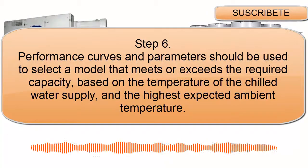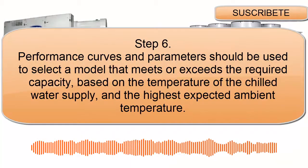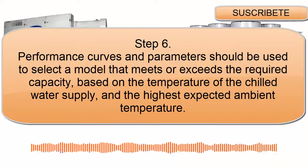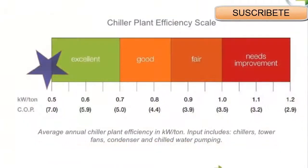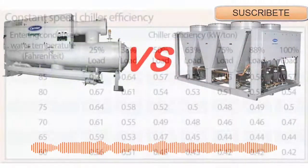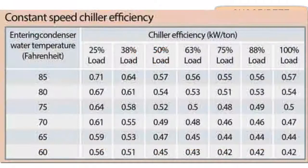Step 6: Performance curves and parameters should be used to select a model that meets or exceeds the required capacity, based on the temperature of the chilled water supply and the highest expected ambient temperature. The margin of safety of the application must be considered with respect to the sizes of coolers available.